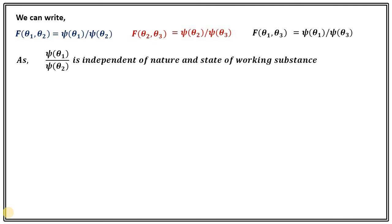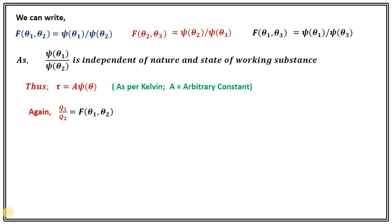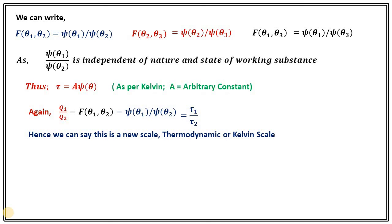Now, ψ(θ1)/ψ(θ2) is independent of the nature and state of the working substance. It can have many functional forms, but Kelvin argued that if we multiply ψ by a constant A, we can define a new scale τ = A·ψ(θ), where A is an arbitrary constant. This is per Kelvin, which is why this scale is known as the Kelvin scale. Utilizing this, Q1/Q2 = F(θ1, θ2) = ψ(θ1)/ψ(θ2) = τ1/τ2, which scales heat with respect to the new thermodynamic scale τ.